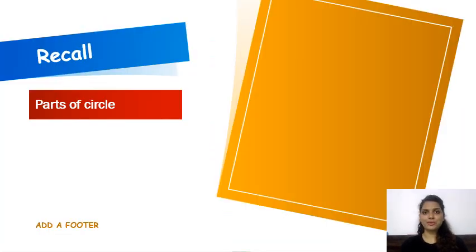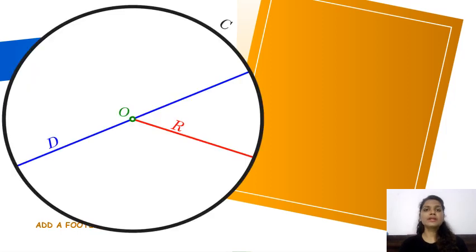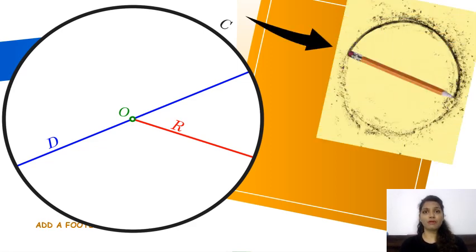Let's see what we already know about circles. We know that in a circle, we have a radius which is half of the diameter. Also, we have a circumference that is the boundary of the circle.